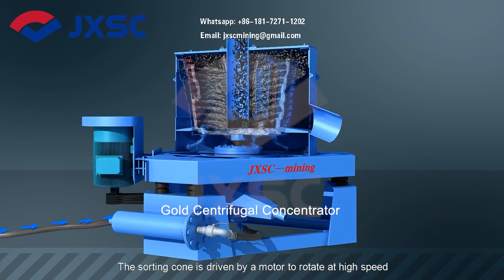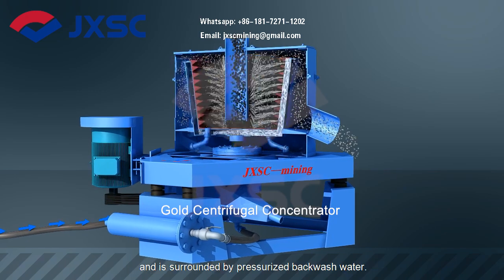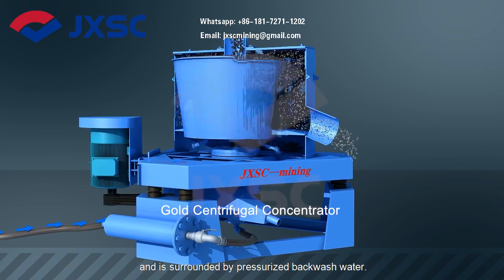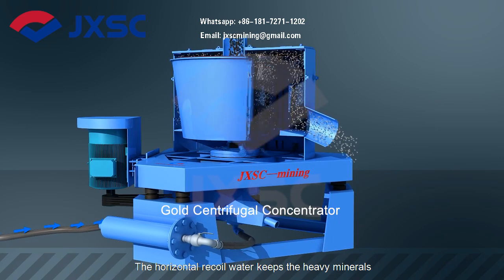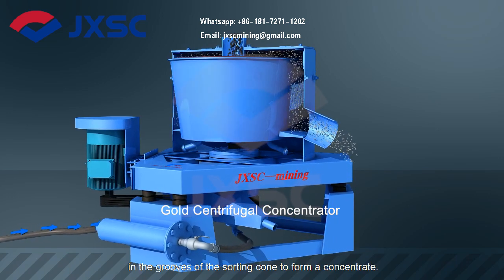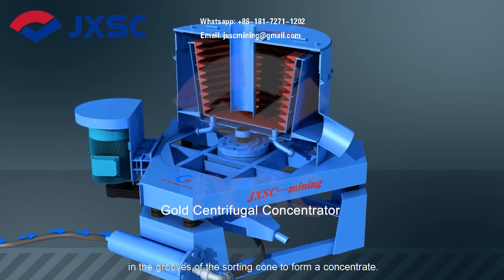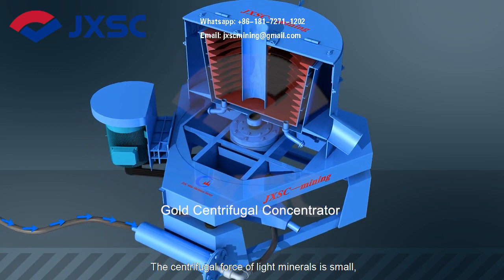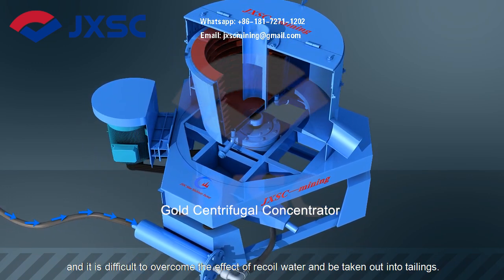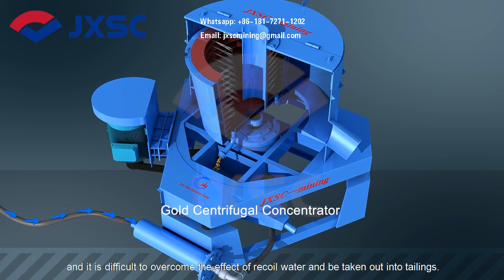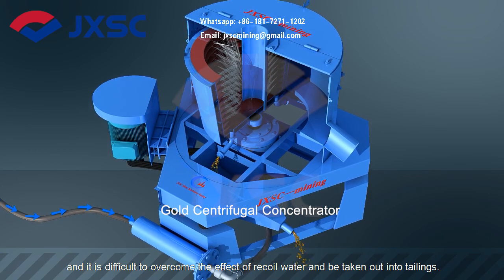The sorting cone is driven by a motor to rotate at high speed and is surrounded by pressurized backwash water. The horizontal recoil water keeps the heavy minerals in the grooves of the sorting cone to form a concentrate. The centrifugal force of light minerals is small, making it difficult to overcome the effect of recoil water, so they are taken out into tailings.